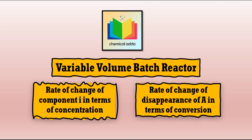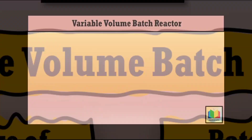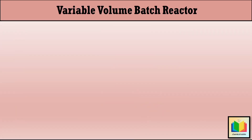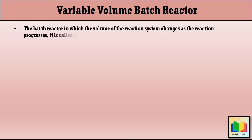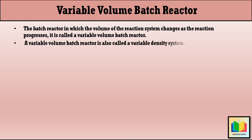We will begin by studying the variable volume batch reactor. The batch reactor in which the volume of the reaction system changes as the reaction progresses is called a variable volume batch reactor. As the reaction proceeds, the volume changes, and hence the density will also change. Therefore, a variable volume batch reactor is also called a variable density system.